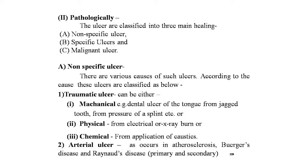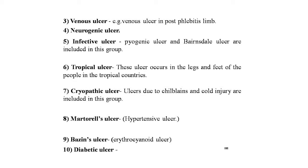Pathologically, ulcers are classified into three main groups: non-specific, specific, and malignant. Non-specific ulcers include: first, traumatic ulcers — mechanical (dental ulcer of the tongue from a jagged tooth, pressure sores), physical (electrical or X-ray burns), or chemical (application of caustics). Second, arterial ulcers occurring in atherosclerosis, Buerger's disease, and Raynaud's disease. Third, venous ulcer — post-phlebitic limb. Fourth, neurogenic ulcer. Fifth, infective ulcer — pyogenic and Buruli ulcer. Sixth, tropical ulcer occurring in legs and feet, caused by infection with Bacillus fusiformis in small abrasions.